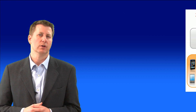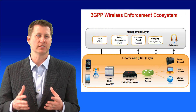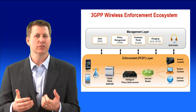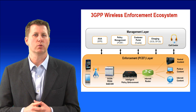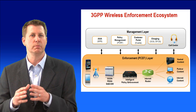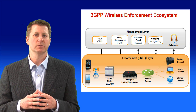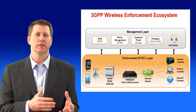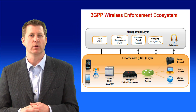3GPP, which develops mobile standards, has defined System Architecture Evolution, or SAE, as the core design for LTE. In this architecture, policy enforcement is carried out as an intermediate point between the internet router and the SAE gateway, which could be a GGSN or a PDSN. Policy management is carried out at a higher layer by a system including an AAA server, the PCRF, the customer portal, and the charging platform.